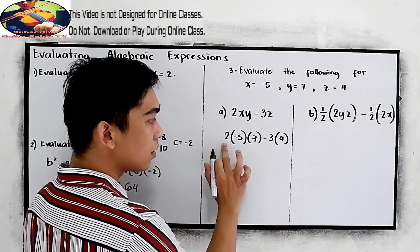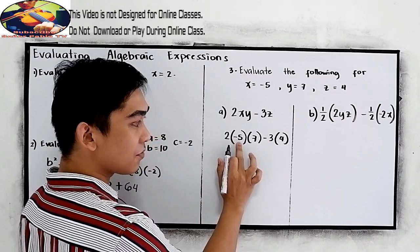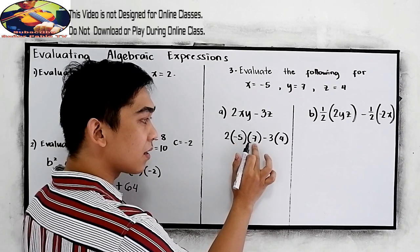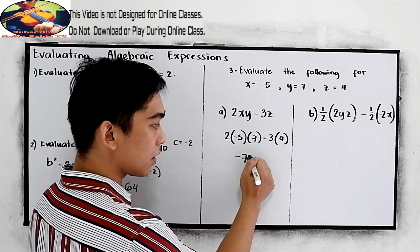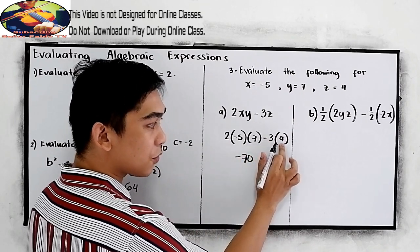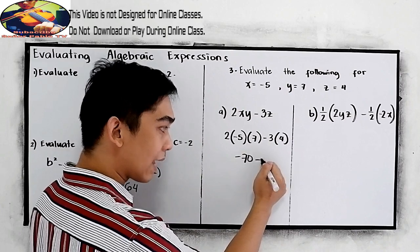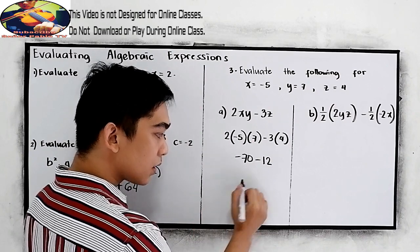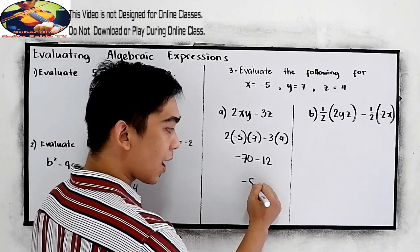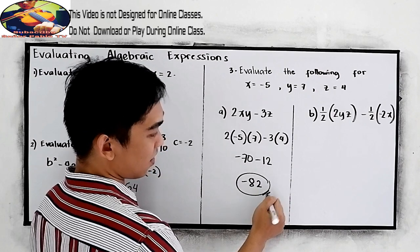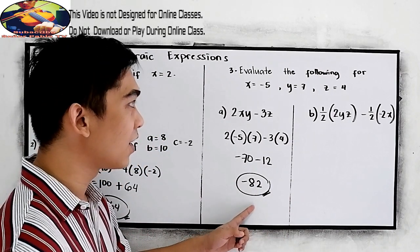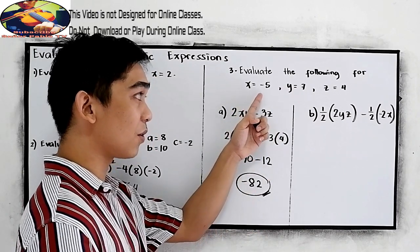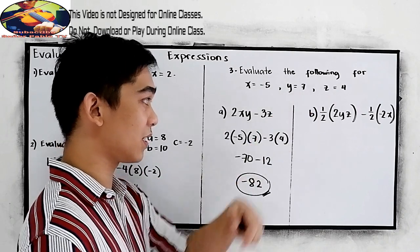Now, we have 2 times negative 5, that is negative 10, times 7, negative 70. Negative 3 times 4, negative 12. Negative 70 minus 12, negative 82. That will be the final answer if we're going to evaluate this expression, if x is equal to negative 5, y is equal to 7, and z is equal to 4.